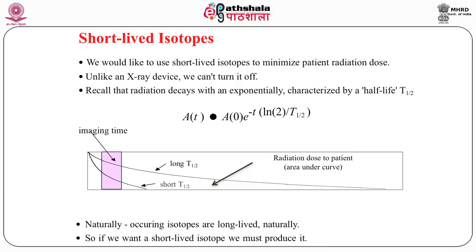Biological decay plays a very important role. If the excretion rate is very fast, the biological half-life is reduced. If uptake is slow or fast, it totally depends on the excretion rate. Uptake is taken by the organ when you administer the activity, but excretion is one of the important things to be looked into. So if we choose an isotope with a short half-life, the scan is done, you get the information, and the dose is minimized.